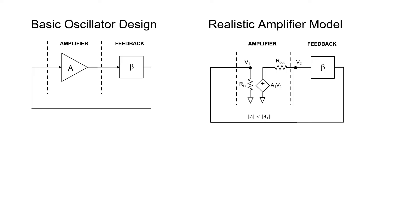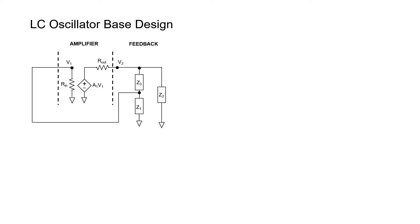The feedback network of the oscillators we're going to examine in this video consists of three elements. They're labeled here as Z1, Z2, and Z3, Z referring to the impedance of the particular circuit element. It might be a capacitor or it might be an inductor. We're going to look at both cases. We'll call this our LC oscillator base design.